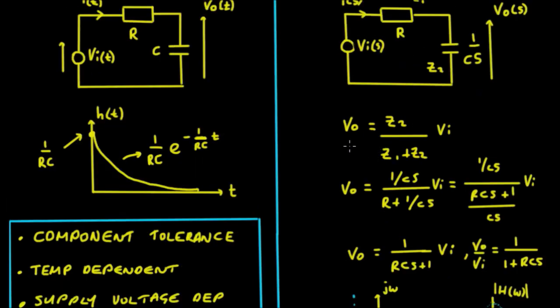Now in the time domain, we could take this function here and transpose it back to the time domain. And it would look like this function here of time, which is 1 upon RC, E to the minus 1 upon RC times the time. And the crossover point here is 1 upon RC.